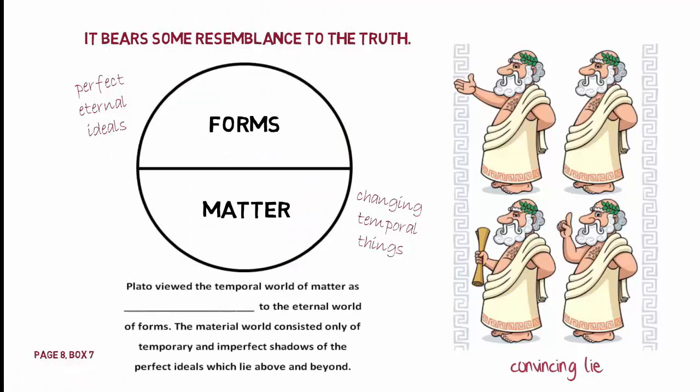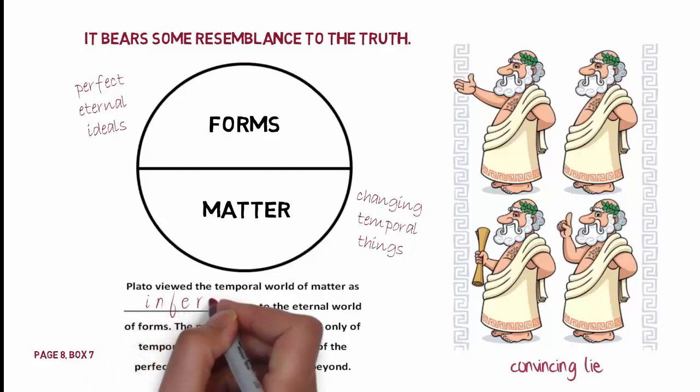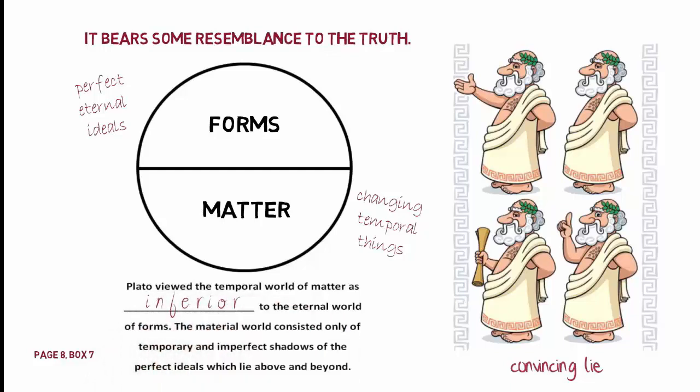Plato viewed the temporal world of matter as inferior to the eternal world of forms. The material world consisted only of temporary and imperfect shadows of the perfect ideals which lie above and beyond.